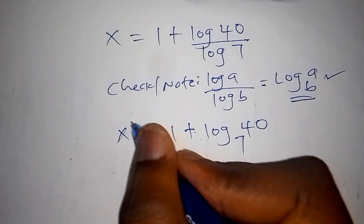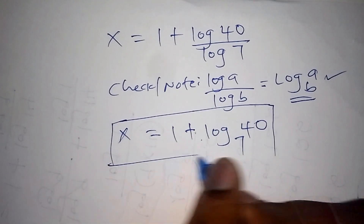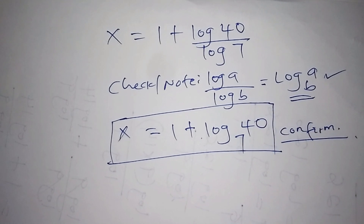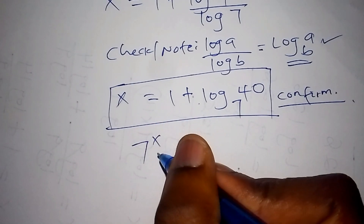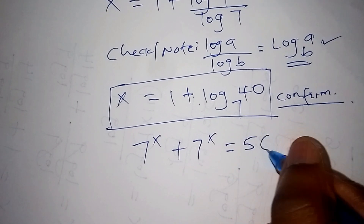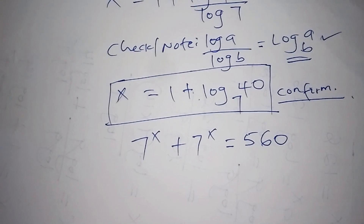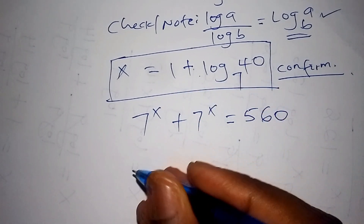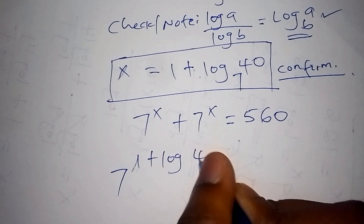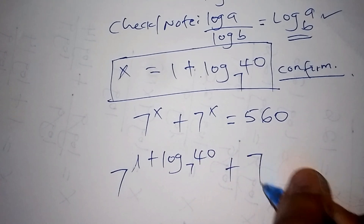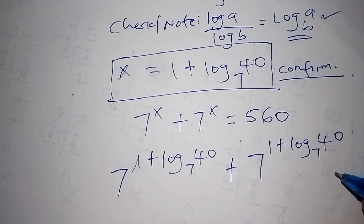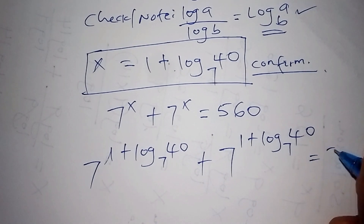These are now our values for x. Let us now check and confirm our answer. We had 7 to the power of x plus 7 to the power of x equals to 560. Substituting x with 1 plus log of 40 to base 7, we have 7 to the power of 1 plus log of 40 to base 7, plus again 7 to the power of 1 plus log of 40 to base 7, and that should equal 560.